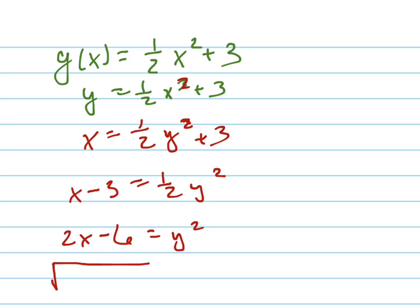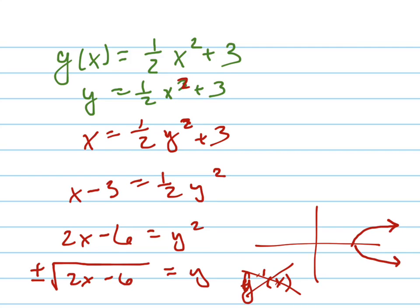But remember, whenever you take the square root, what do you have to do? Plus or minus. You have to put a plus or minus sign in front of it. So that equation right there is actually that and the bottom half of that because of the plus and the minus. So I can't write g inverse of x because it's not a function. It doesn't pass the vertical line test.